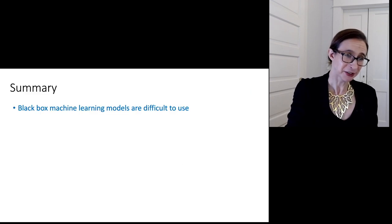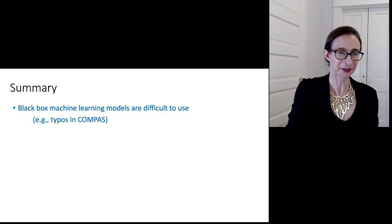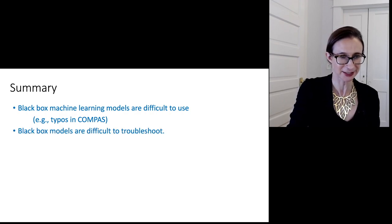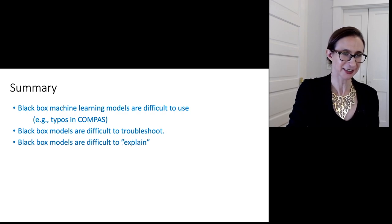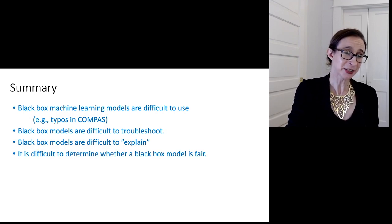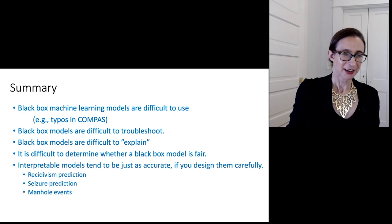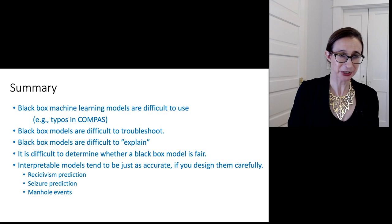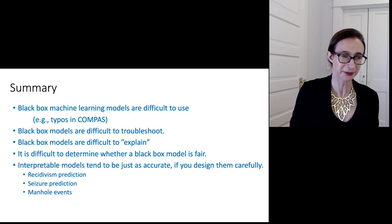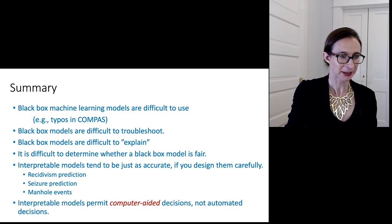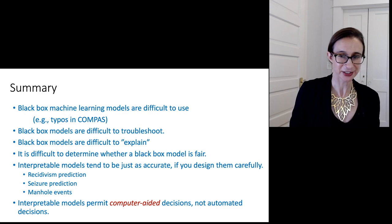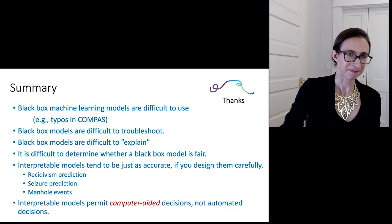To summarize: black box machine learning models are difficult to use in practice — there seem to be data errors in the COMPASS score we can't explain. Black box models are difficult to troubleshoot, as shown with the Con Edison example. They're difficult to explain, as ProPublica couldn't explain COMPASS correctly. It's also difficult to determine whether a black box model is fair — again, the ProPublica COMPASS situation is an example. Interestingly, interpretable models tend to be just as accurate if you design them carefully — I gave three examples: recidivism prediction, seizure prediction in ICU patients, and predicting manhole events on the New York City power grid. And interpretable models allow computer-aided decisions rather than automated decisions. Thank you very much.